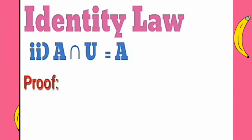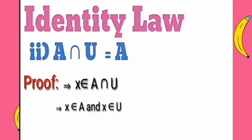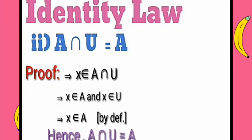Proof. Let x be an element of A intersection U. So we can write x belongs to A and x belongs to U. Since U is the universal set, by definition x belongs to A. Hence A intersection U is equal to A. Proved.